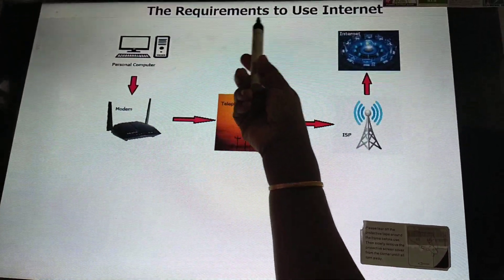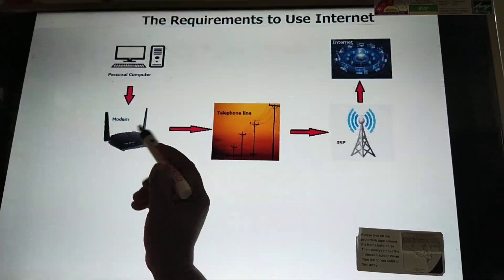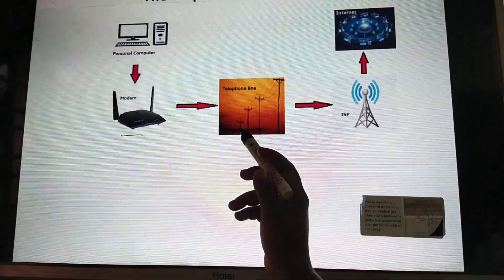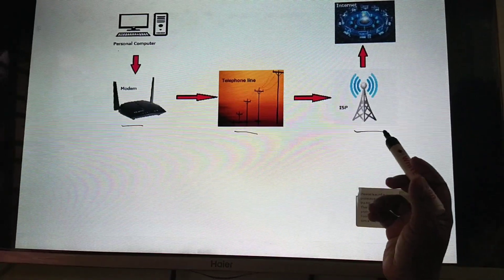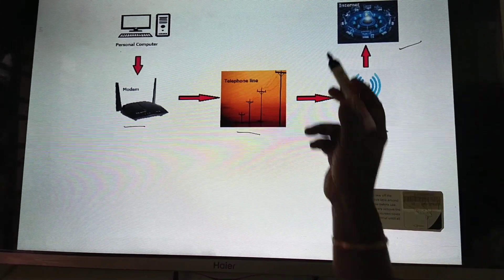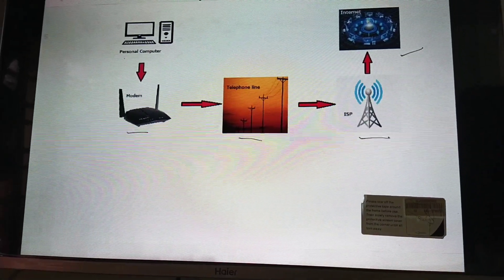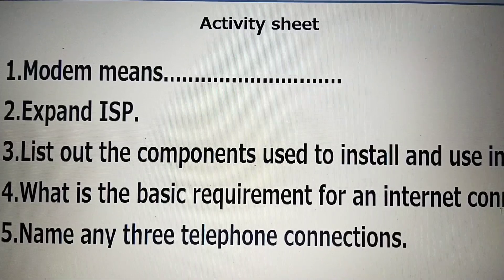What is the first one? Personal computer, then modem, telephone line, ISP or internet service provider, and internet. So these are the requirements to use an internet connection, my children.